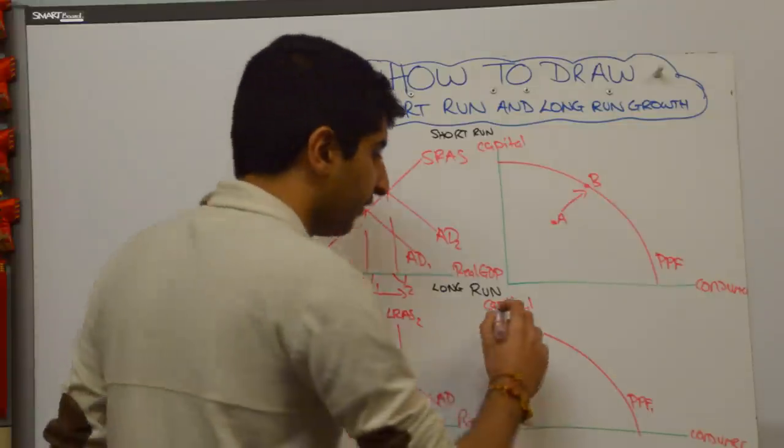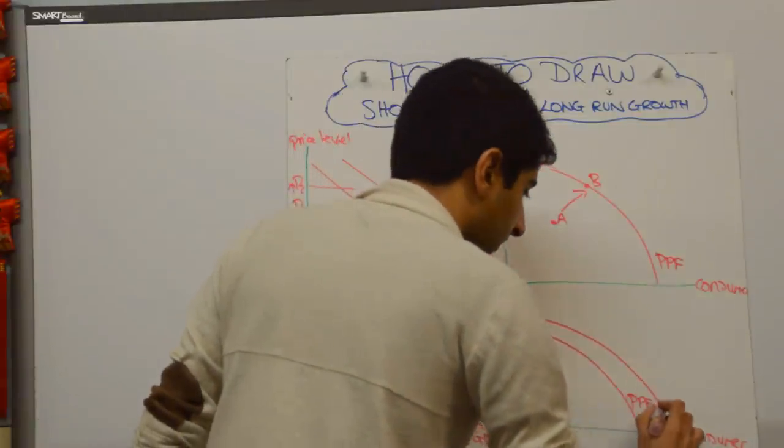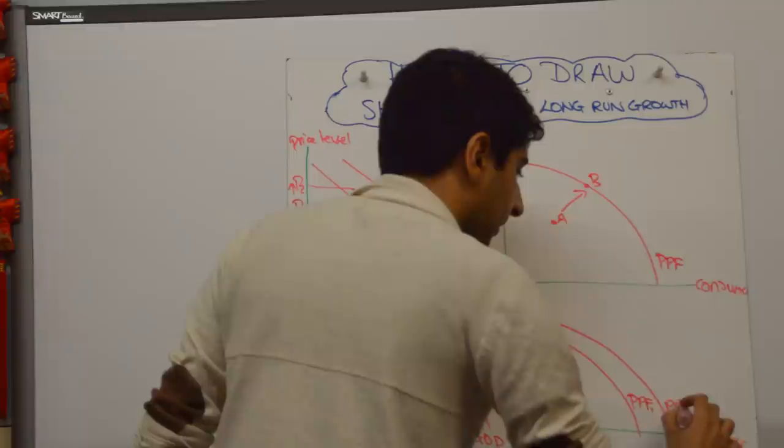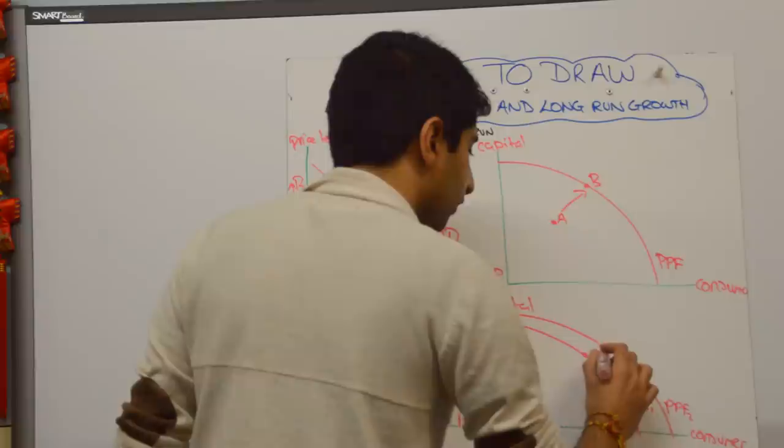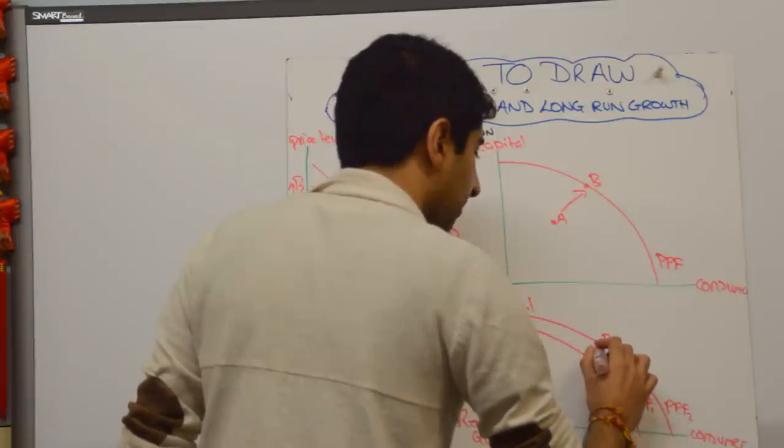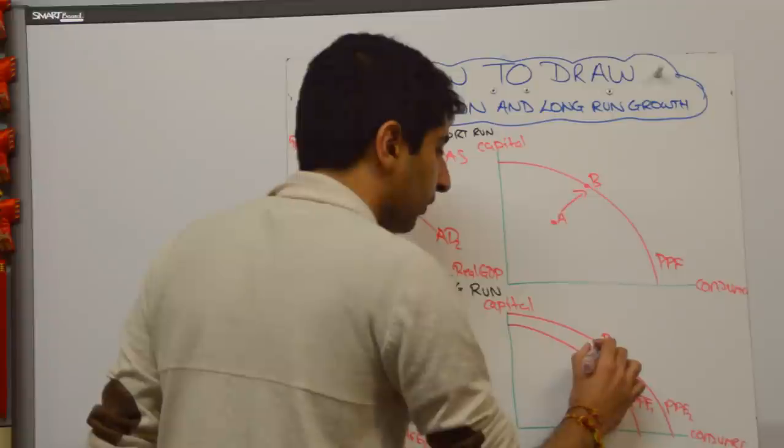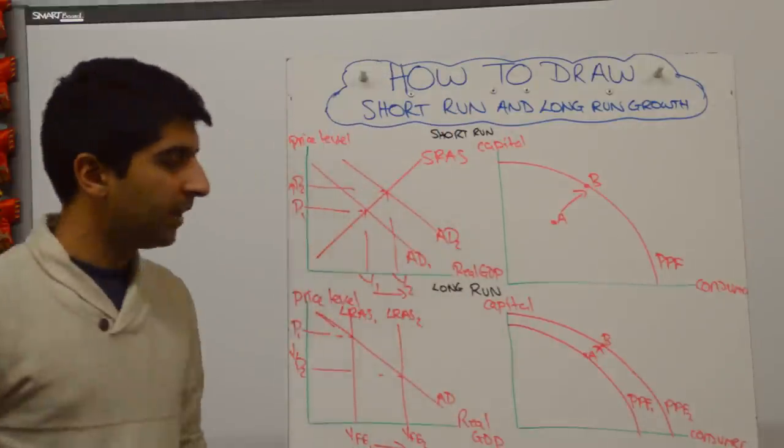We shift the PPF curve outwards. Like that. And call that PPF2. If you want to say that the economy moved maybe from point A to point B, feel free to do so with a little arrow to make that clear.